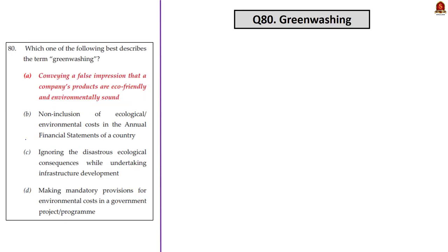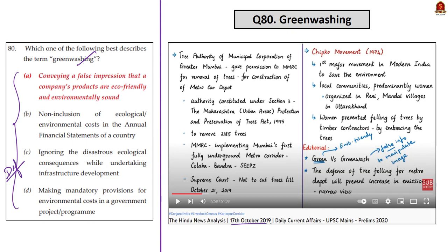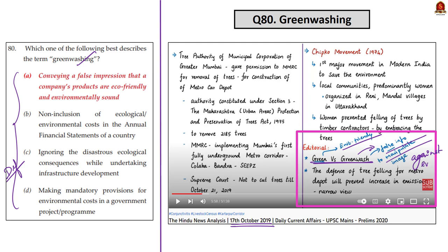The next question is about greenwashing. In our October 17, 2019 analysis, we saw the difference between 'green' and 'greenwash.' Greenwash is the opposite of green — it refers to conveying false information to manipulate people into thinking a company is environmentally friendly. The word is used when a company or government provides misinformation to develop a green environmental image. So option A — conveying a false impression that a company's products are eco-friendly — is the correct answer.